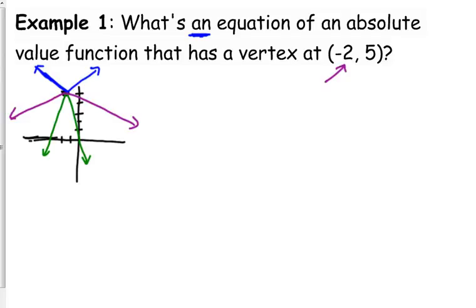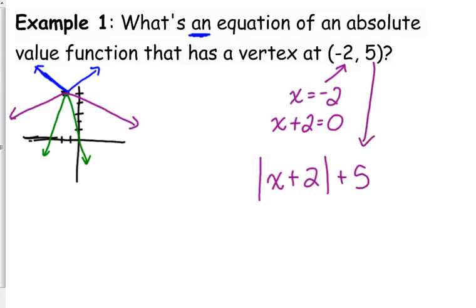So remember where the x-coordinate of the vertex comes from. The x equals negative 2. If we set that equal to 0, if we make that equal to 0, x plus 2 is what was inside of our absolute value. And remember the y-coordinate is just the number there on the end. So this is an equation. This is the simplest one, the most straightforward one.